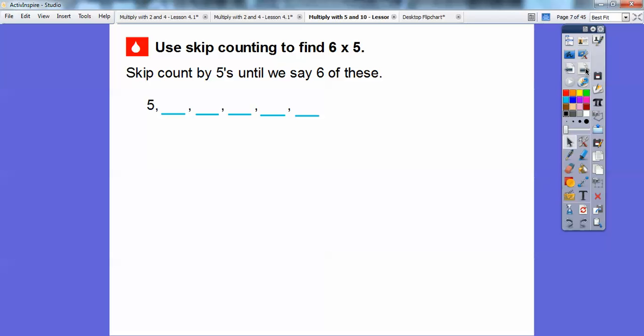What we're going to do first here is we're going to use skip counting to find six times five. And by now, you should know how to count by fives. Five, ten, fifteen, twenty. Remember how to do that? We're going to skip count by fives, and we're going to do it six times. So here's the first one. I already gave that one for you here. So I'm just going to count by five. This is going to make six numbers here, counting this first one right here is five.